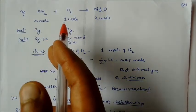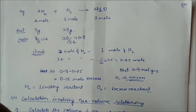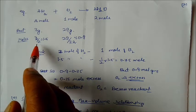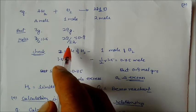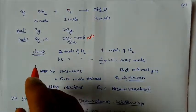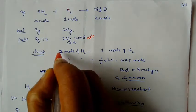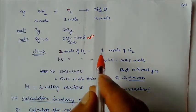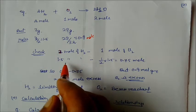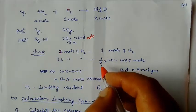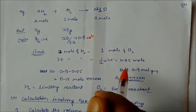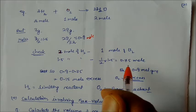Convert weight to moles: 3 grams of H₂ divided by molar mass = 1.5 moles of hydrogen; 29 grams of oxygen divided by 32 = 0.9 moles of oxygen. Now check: for 2 moles of hydrogen we require 1 mole of oxygen. For 1.5 moles of hydrogen, oxygen required = (1/2) × 1.5 = 0.75 moles.